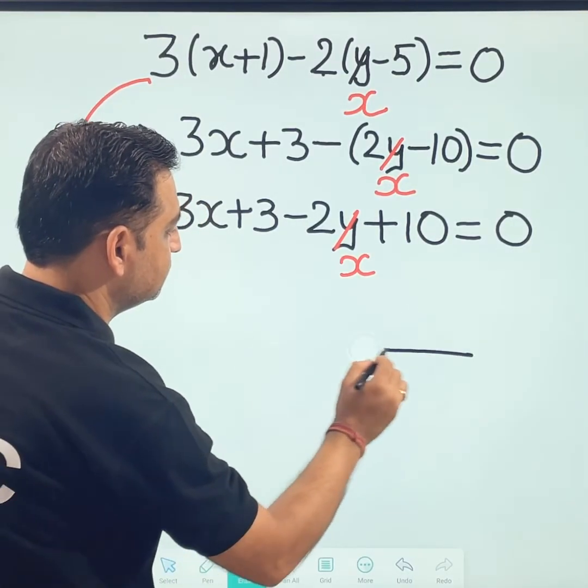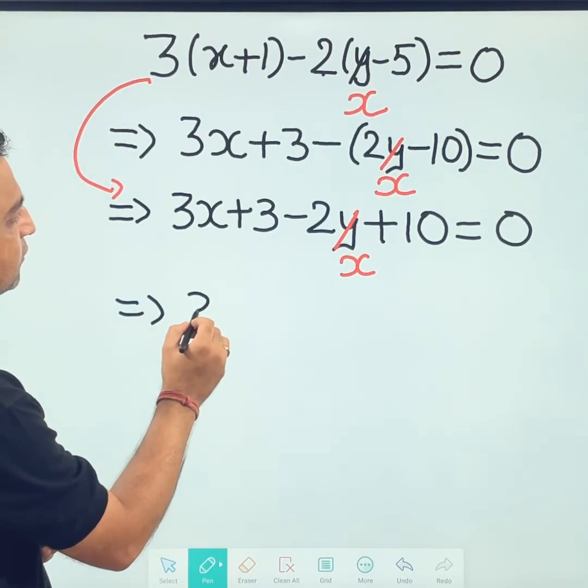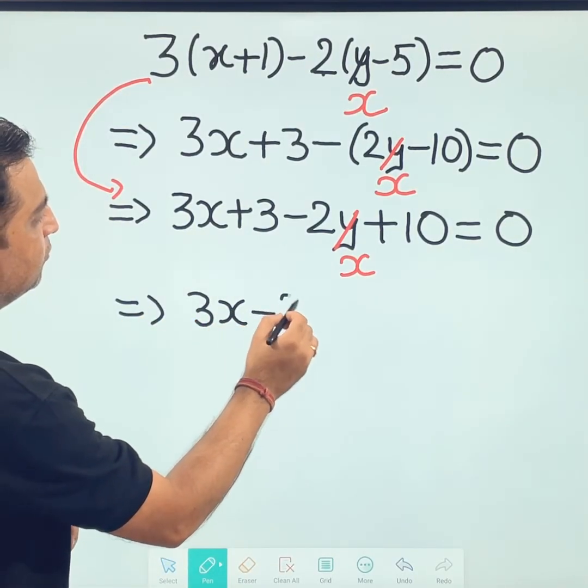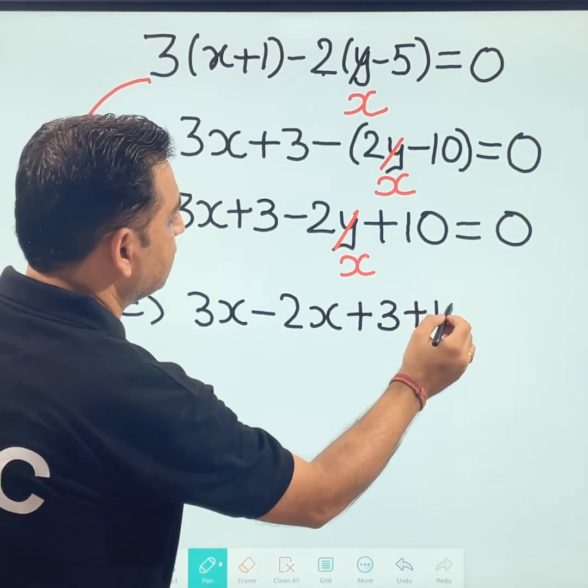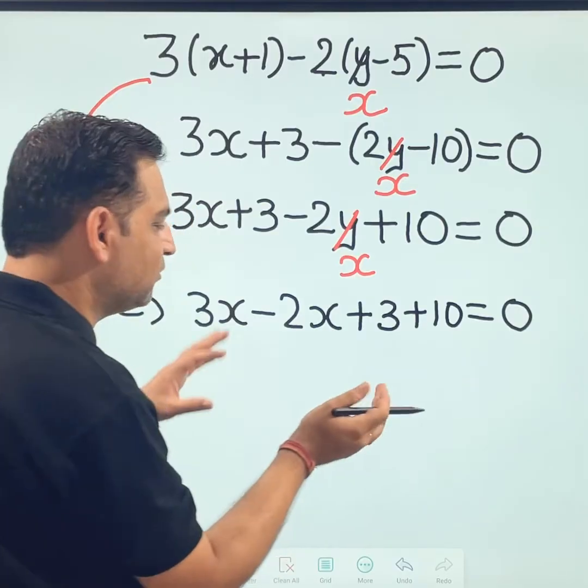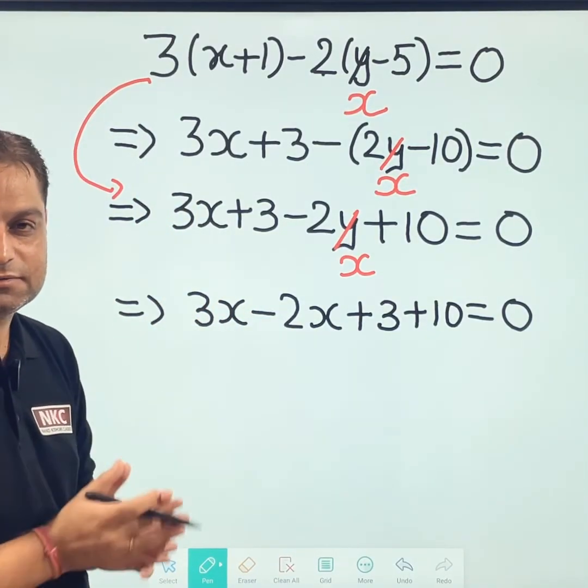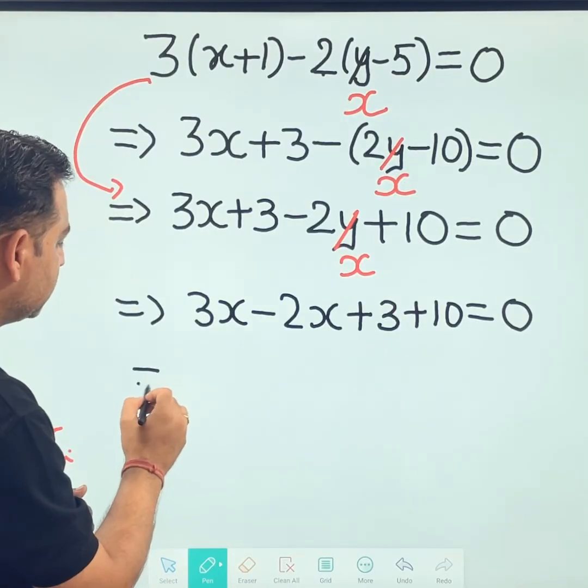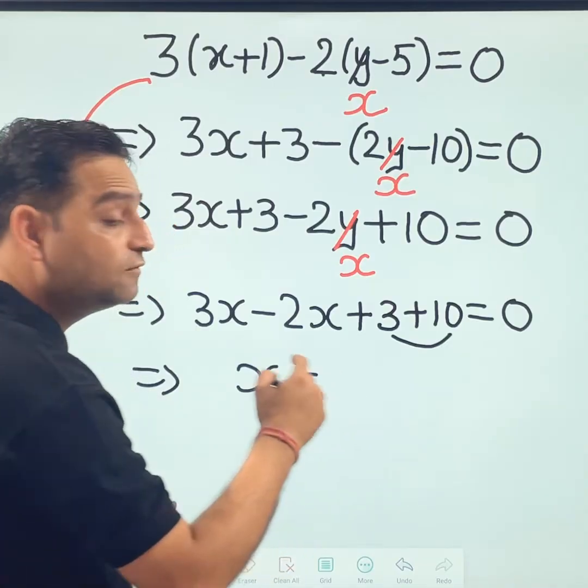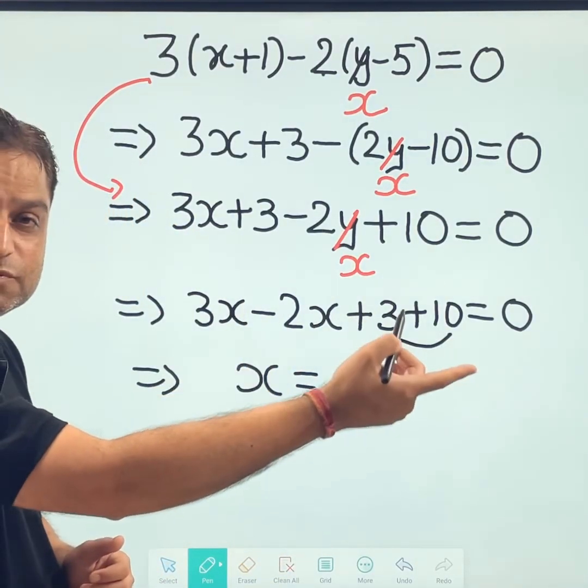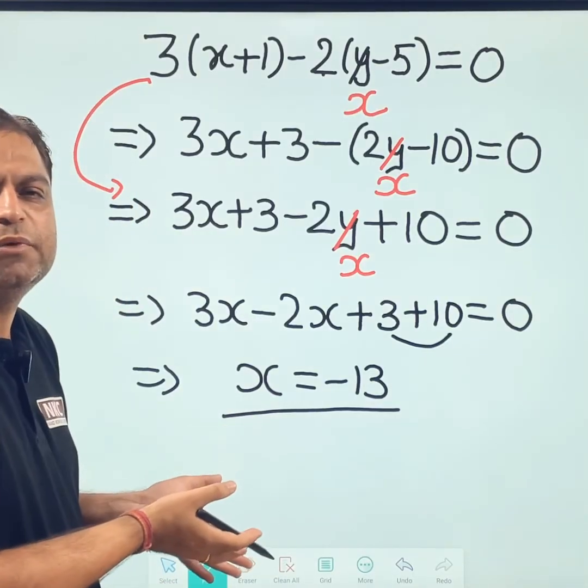Now, check the last step. This will become 3x minus 2x plus 3 plus 10 equal to 0. What I have done? I have interchanged the terms and brought like terms near to each other. Now, 3x minus 2x is x and 3 plus 10 is 13 which when we transpose to right side, its sign will be negative. Then I will get x is equal to minus 13.